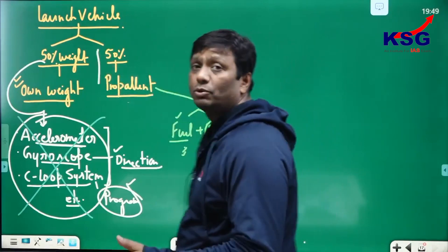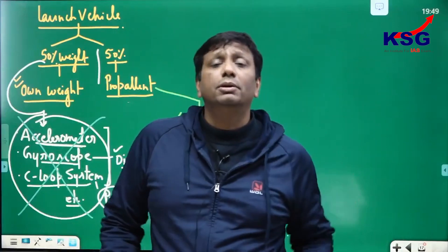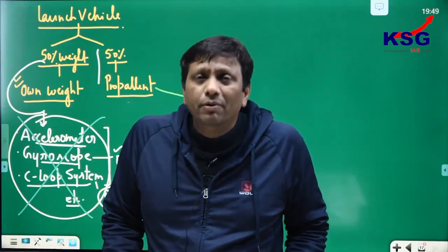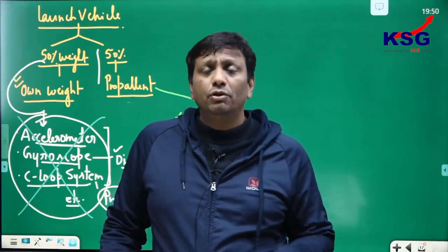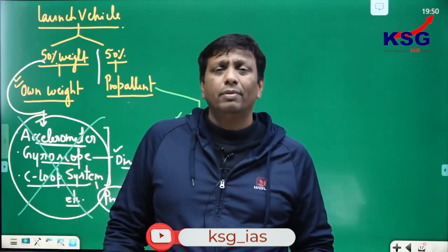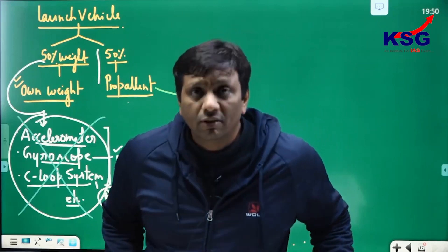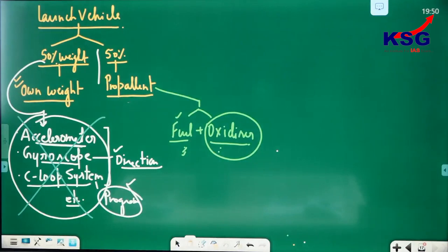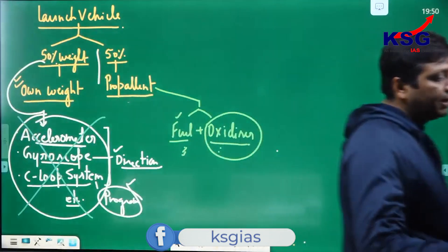50% of the weight is propellant, and this weight is huge. The reason is you are going to carry satellites around 36,000 kilometres, Chandrayaan around 3 lakh kilometres, and Mangalyaan around 400 lakh kilometres. In between, is there any petrol pump? No. If there is no chance of refilling, you must carry a huge amount of propellant mass. That is why you must follow a huge mass here.